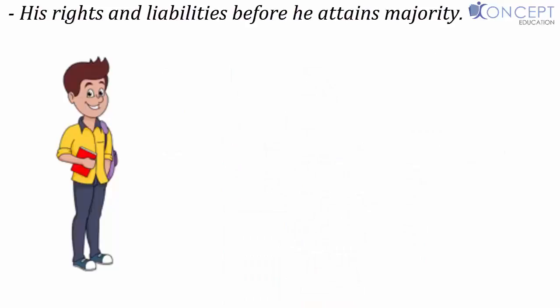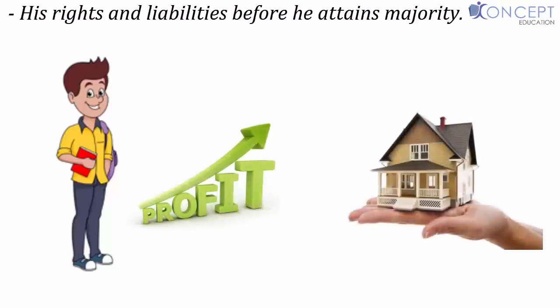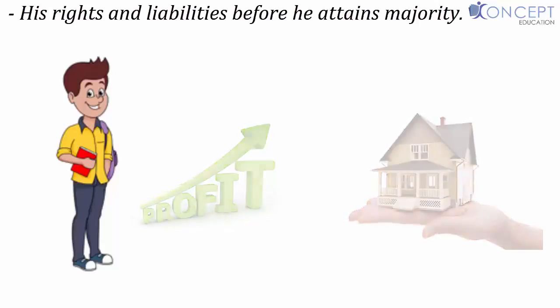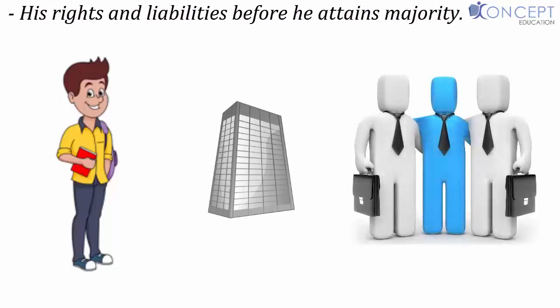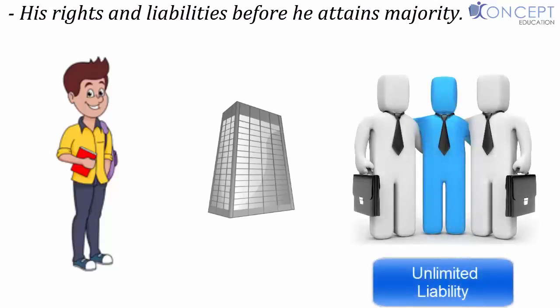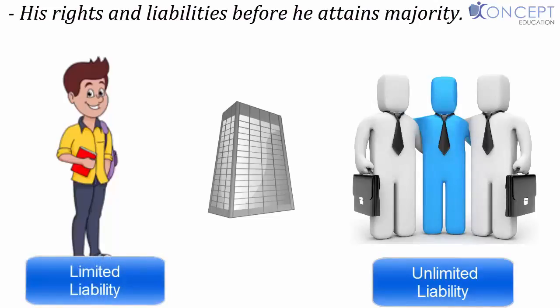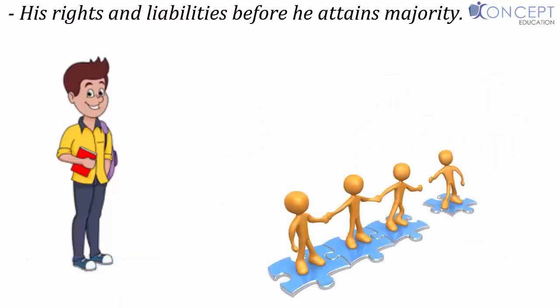Regarding liabilities before attaining majority, a minor's liability is only confined to his share of profits and property. If the firm in which the minor is a partner goes insolvent, all the other major partners will have unlimited liability, but the minor will have only limited liability — up to his share of the partnership property. For example, suppose A, B, C, and D are partners, with D as the minor partner holding one-fourth rights towards property and profits.